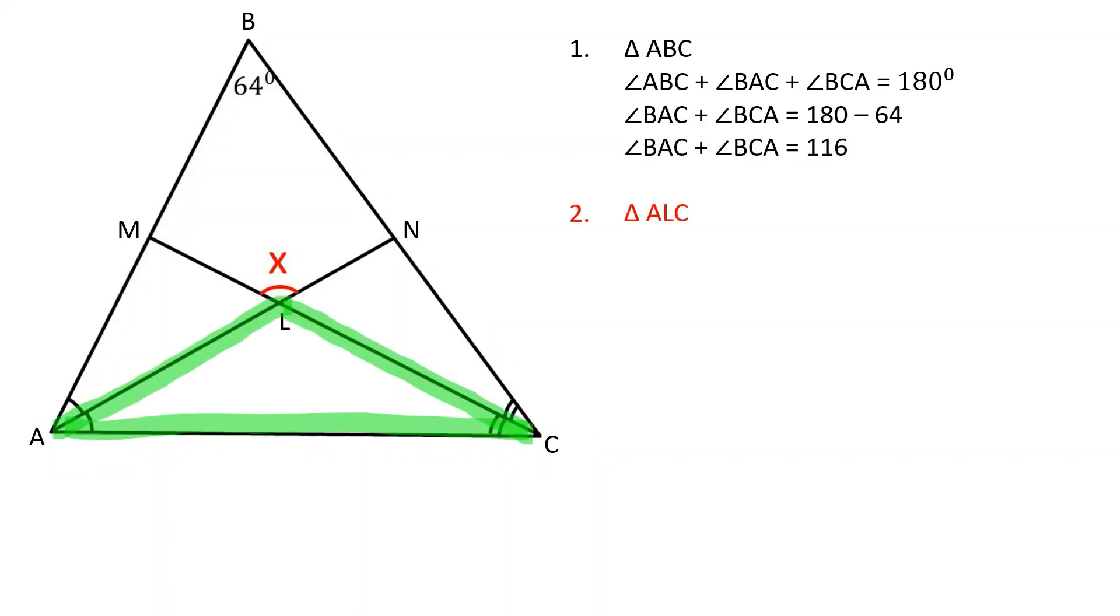Now, let's review the triangle ALC. The sum of the interior angles of a triangle is equal to 180 degrees. Therefore, angle ALC is equal to 180 minus the sum of angles LAC and LCA.